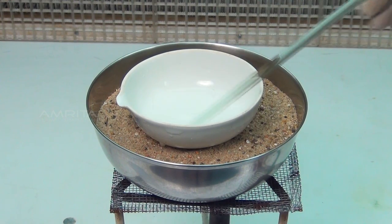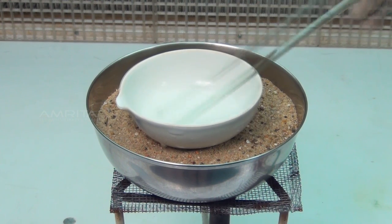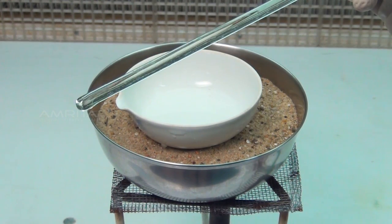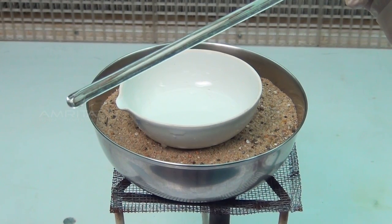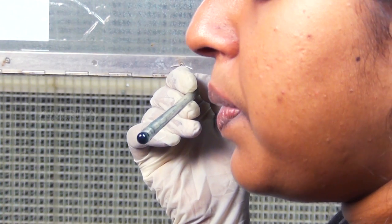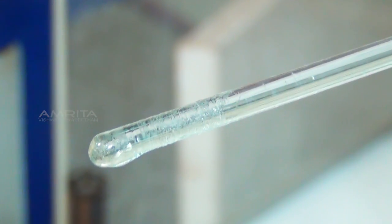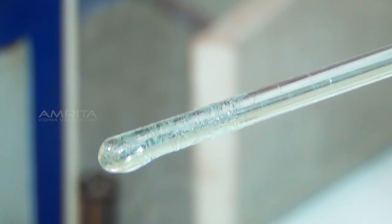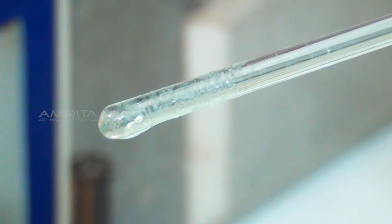To know if the solution has reached its crystallisation point, remove a drop of the solution at the end of the glass rod and cool it by blowing. The appearance of a crust or tiny crystals on the glass rod shows that the crystallisation point has been reached.